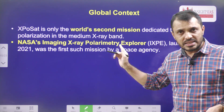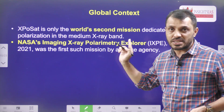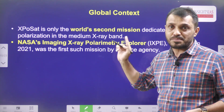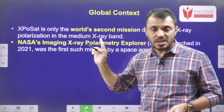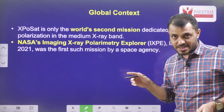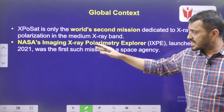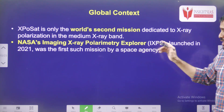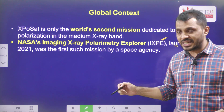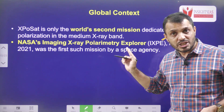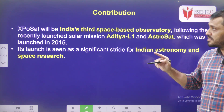Regarding the global context, India is the second country to send this kind of space observatory satellite into space, after NASA. NASA launched the Imaging X-ray Polarimetry Explorer, IXPE, in 2021. It was the first such observatory dedicated to X-ray radiation. India's XPoSat is thus the second dedicated X-ray polarimetry mission in the world.